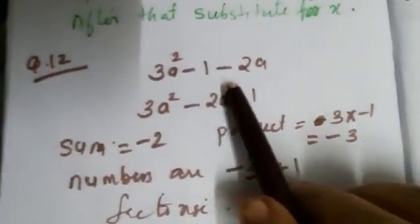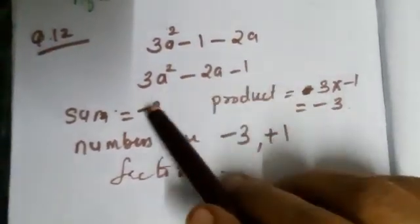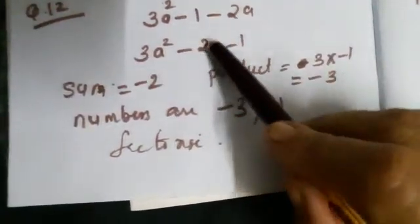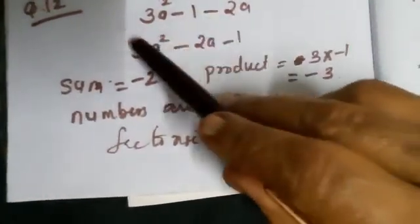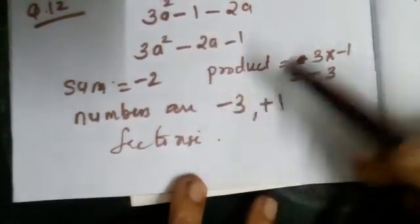Question No. 12: 3a²-1-2a. Arrange this as a quadratic expression: 3a²-2a-1. Here sum equals -2, product equals 3×(-1). So the numbers are -3 and +1, then factorize.